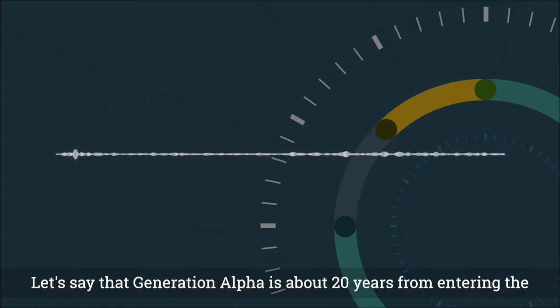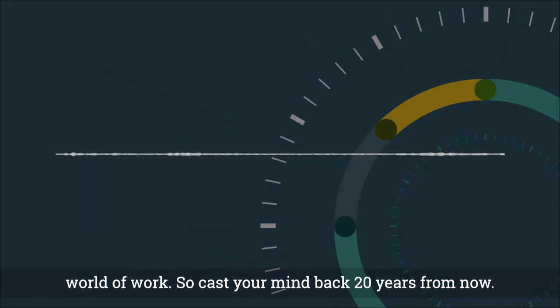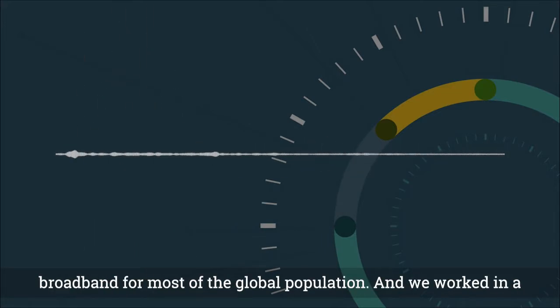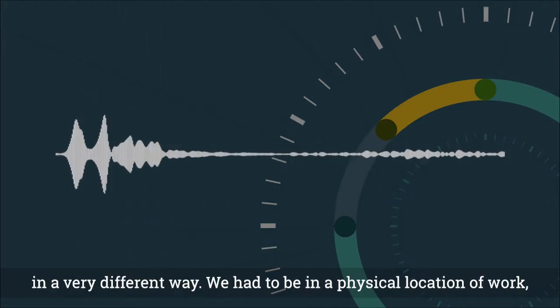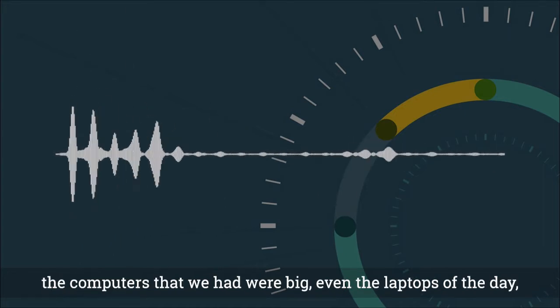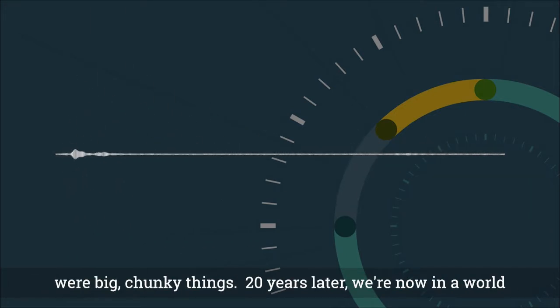Let's say the Generation Alpha is about 20 years from entering the world of work. So cast your mind back 20 years from now. So in 2000, there was no iPhone. There wasn't really domestic broadband for most of the global population. And we worked in a very different way. We had to be in a physical location of work. The computers that we had were big. Even the laptops of the day were big, chunky things.